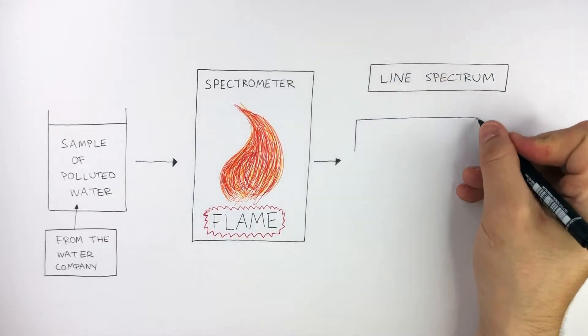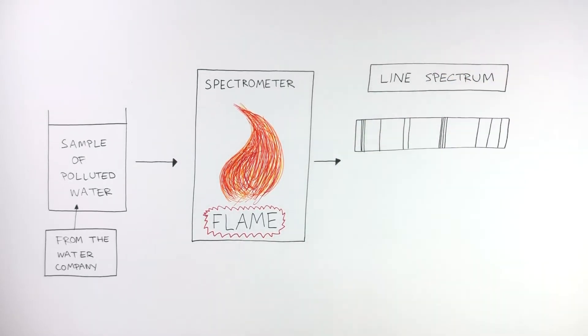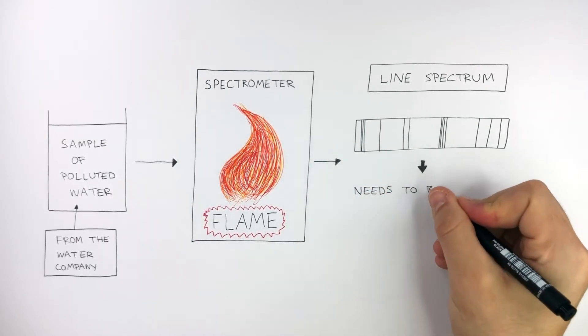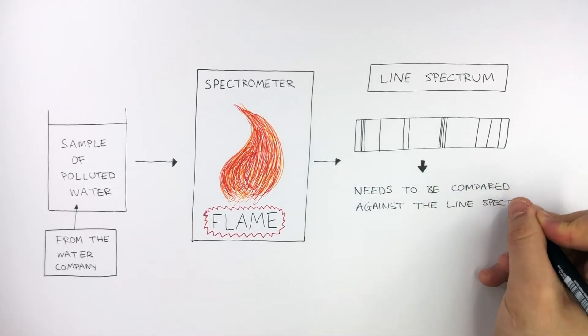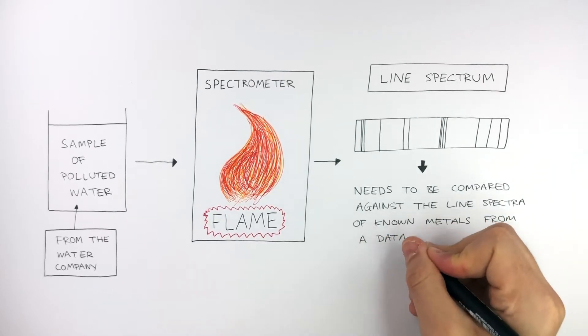This is a basic form of a line spectrum. A line spectrum shows the characteristic wavelength of light each metal ion absorbs and releases. This line spectrum needs to be compared against the line spectra of known metals from a database.